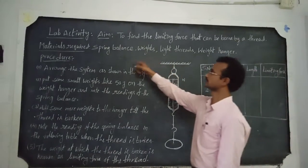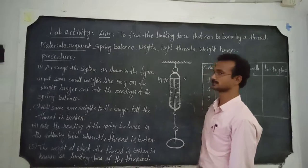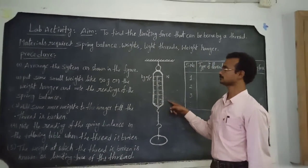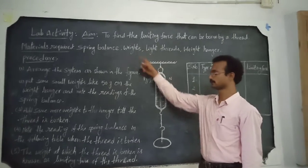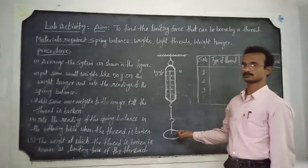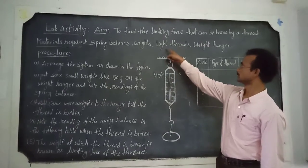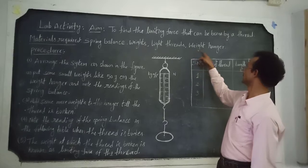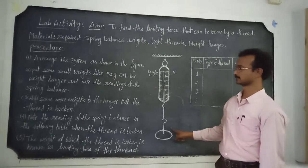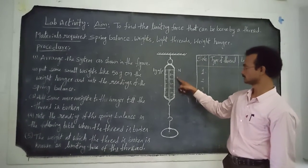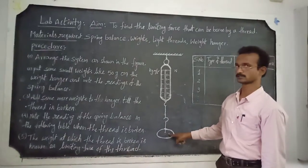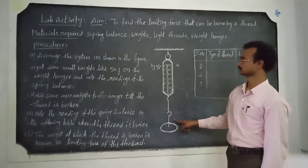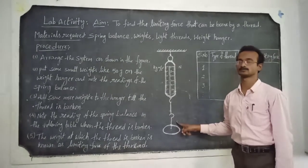To do this lab activity we require some materials. The materials required are: a spring balance, some weights to place on the weight hanger, light-weighted threads, and a weight hanger. These are the materials required to do this lab activity.